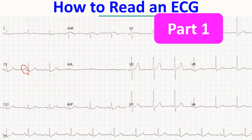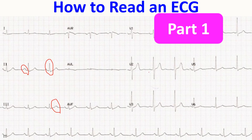This is the P wave on ECG, this is the QRS complex, and here is the T wave — the primary waves seen in the ECG. This region is the PR interval, this is the ST segment, and from the beginning of QRS to the end of the T wave, that is the QT interval.